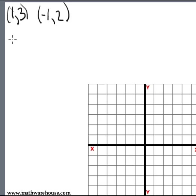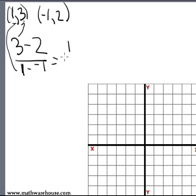So change in y is going to be 3 minus 2. Change in x. Remember, if we start with this 3 here, we have got to bring this 1. We've got to start with this 1 here. 1 minus negative 1, which will give you a 1 over 2. Again, you could have started with the negative 1 and the 2. I chose to start with the 1 and the 3. Either one will get you to the same 1 half.